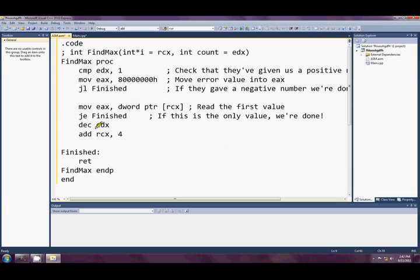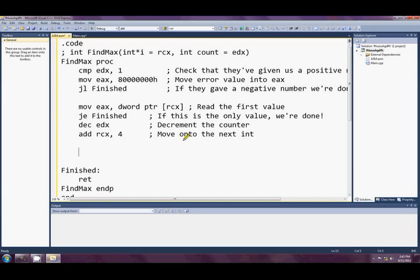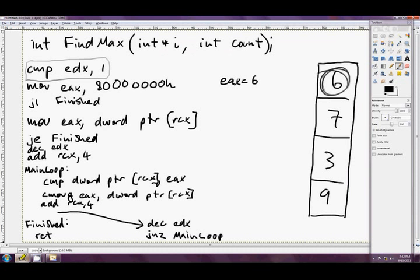Maybe I should comment these things. Check that they've given us a positive number. If they gave a negative number, we're done. Okay, so this is read the first value. Okay, so that line there is sort of assume that the first value is the max. If that happens to be the only value we're done. Otherwise, decrement the counter, which we know is something other than zero because of all of this stuff before, and move on to the next int in the array.